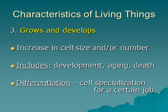Astroturf doesn't have a life cycle because it doesn't have a body. It wears out through structural breakdown of atoms, whereas cells actually live, die, and regenerate. This increase in cell size or cell number is growth and development. Another important aspect is differentiation — cell specialization for a certain job. As organisms get older, these jobs may not function as well, and that's where aging takes place. This process is unique to living things.